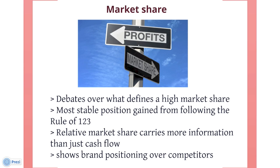The exact measure is the brand's share relative to its largest competitor. Thus, if the brand had a share of 20% and the largest competitor had the same, the ratio would be 1:1. If the largest competitor had a share of 60%, however, the ratio would be 1:3, implying that the organization's brand was in a relatively weak position. If the largest competitor only had a share of 5%, the ratio would be 4:1, implying that the brand owned was in a relatively strong position, which might be reflected in profits and cash flows.